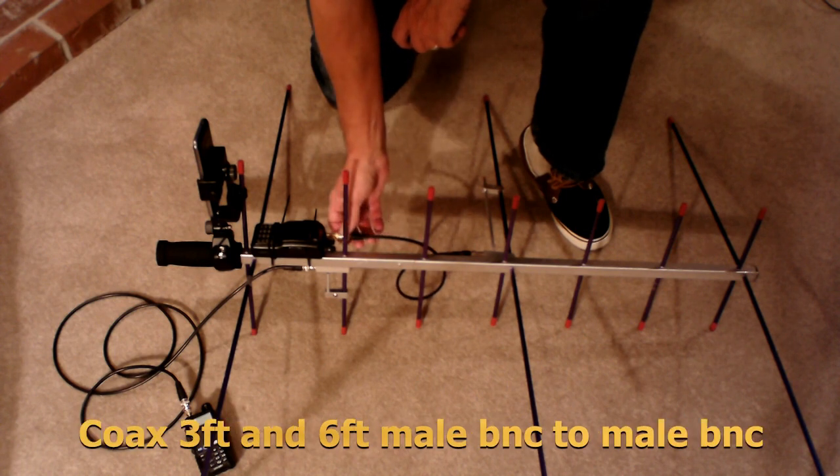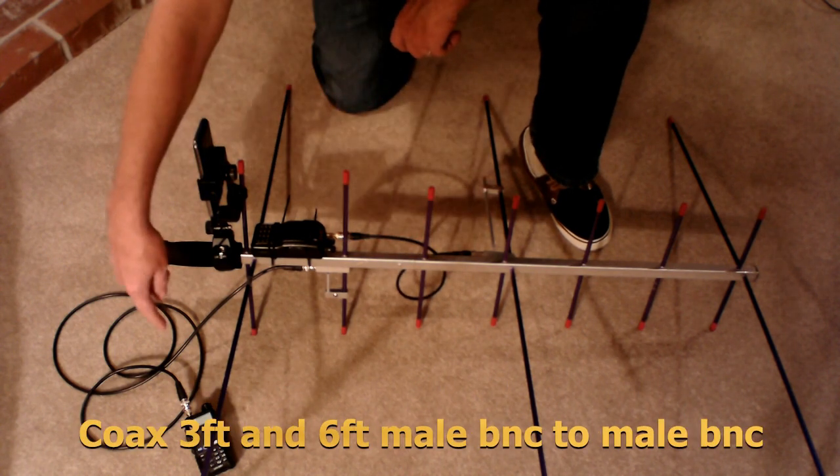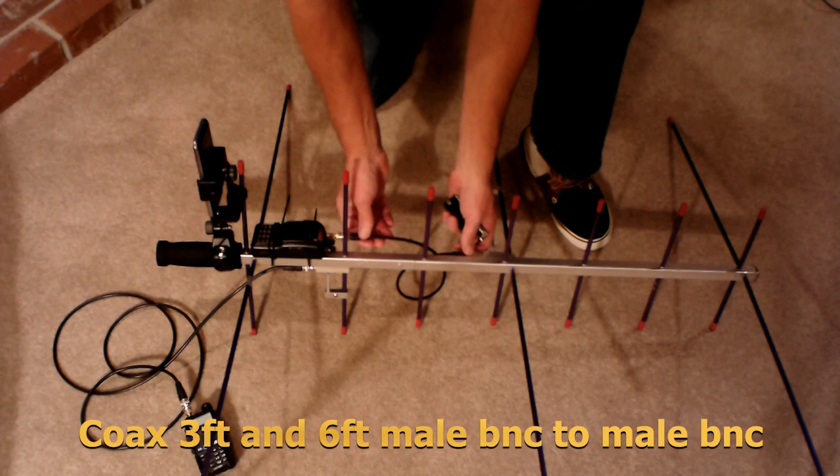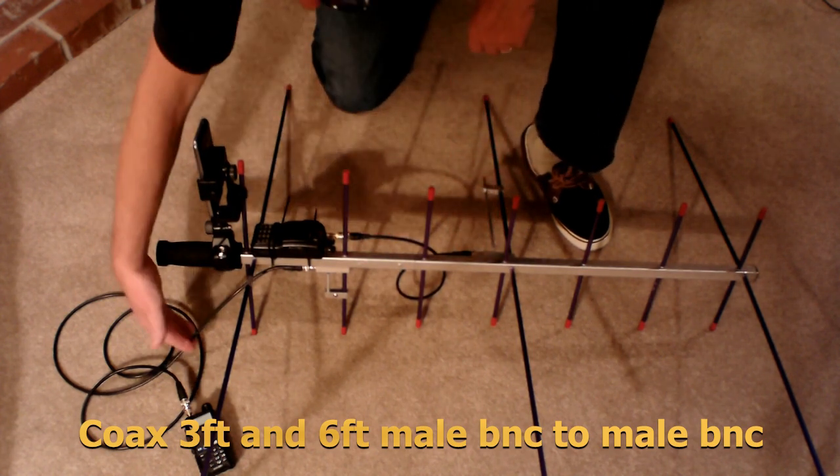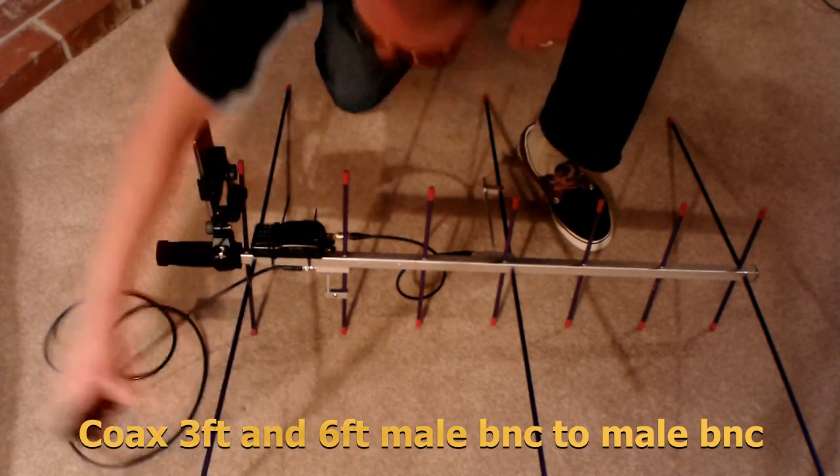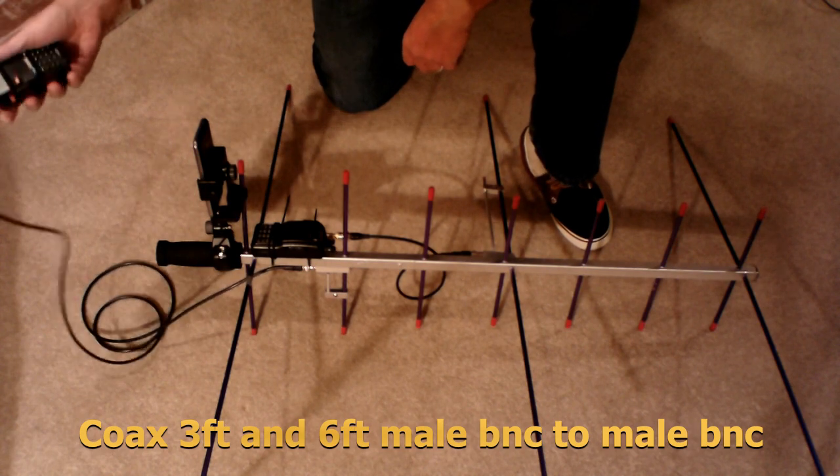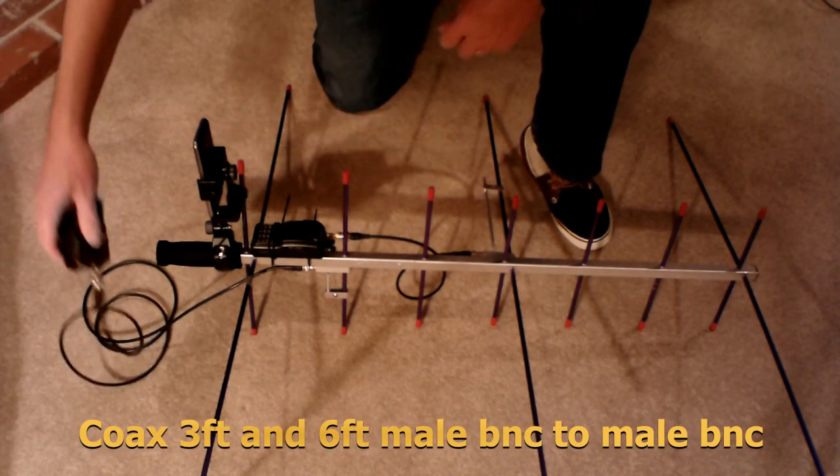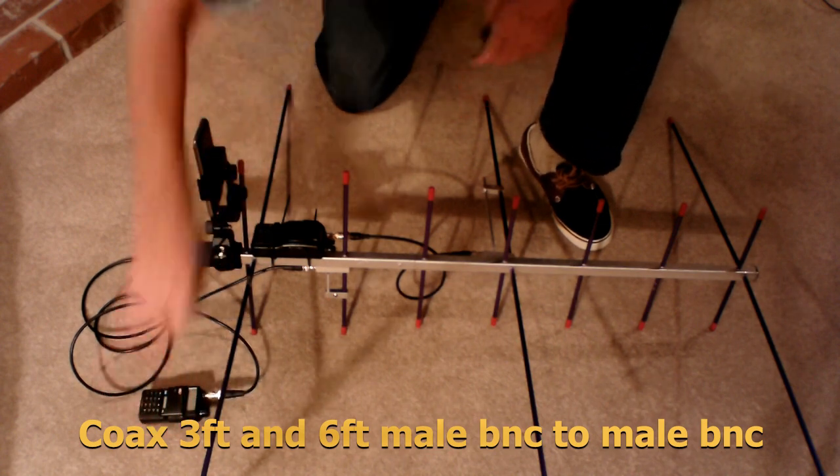And let's see what else we have. Short jumpers. These are BNC to BNC. This is about a three foot jumper, and we have a six foot jumper here. This allows you to be able to hang on to the transmit radio as you swing the antenna in the direction of the satellite.